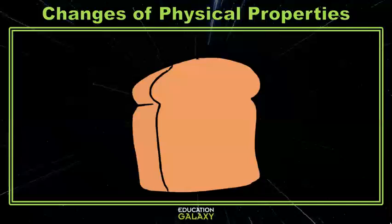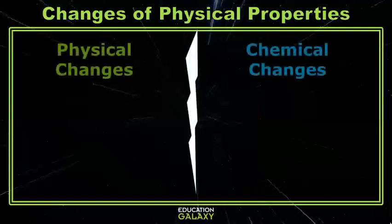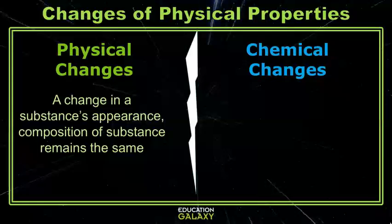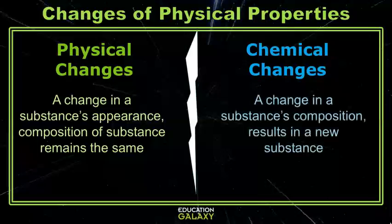Well, let's take a look. There are two different types of changes: physical changes and chemical changes. Physical changes are what happens when something's appearance changes but the composition stays the same, while a chemical change is when something's composition changes and something new is made.